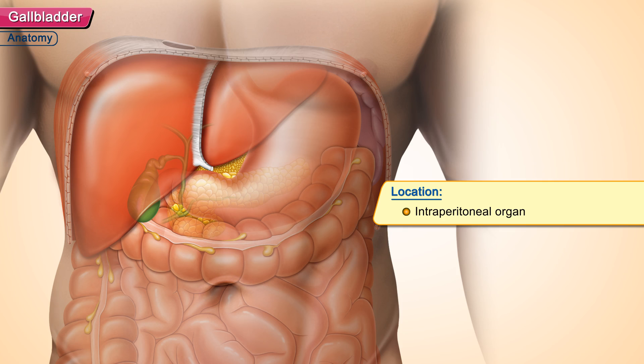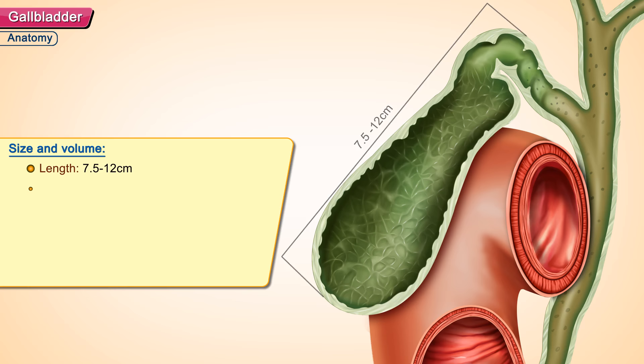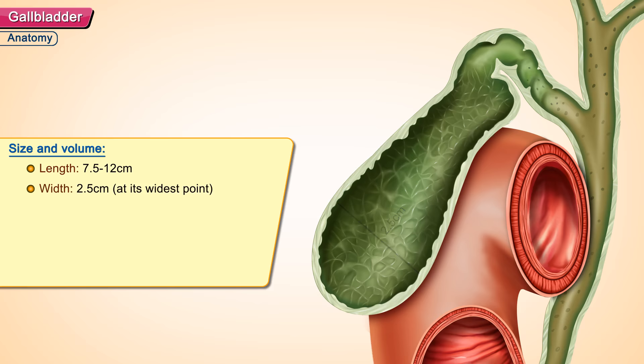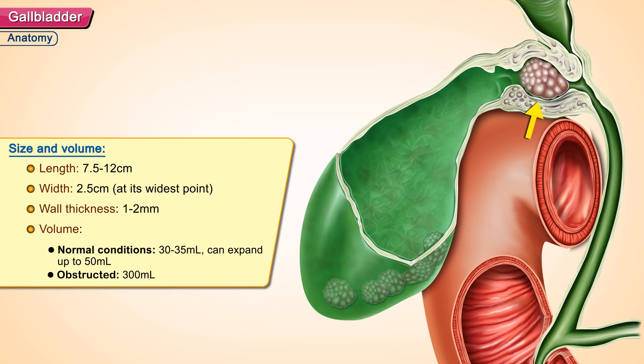The gallbladder is an intraperitoneal organ. Its length is 7.5 to 12 cm long and 2.5 cm wide at its widest point. The wall thickness is 1 to 2 mm. Volume is 30 to 35 ml under normal conditions but can expand up to 50 ml, although if obstructed, it can distend to accommodate up to 300 ml.